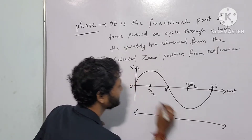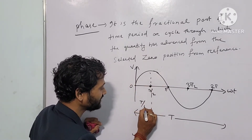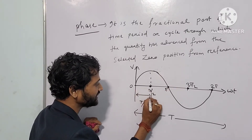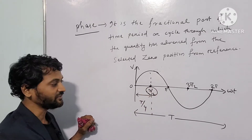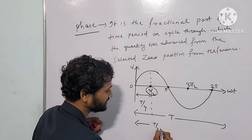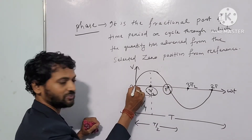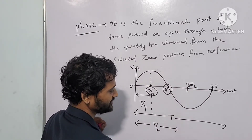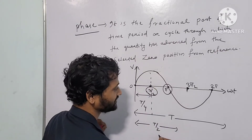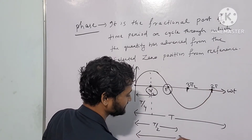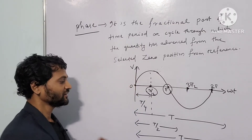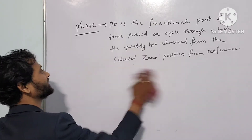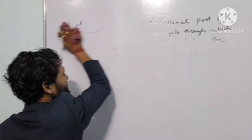Let us have an AC cycle — let it be voltage. The y-axis is V and the x-axis is omega t. So this is 0, this one is pi by 2, this is pi, this is 3 pi by 2, and last one is 2 pi. I have taken 5 instants. So pi by 2 is an angle — it is a phase. Pi is an angle — it is a phase. 3 pi by 2 is a phase. 2 pi is a phase. So phase simply means angle.